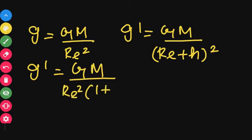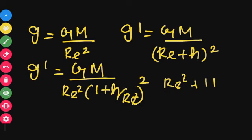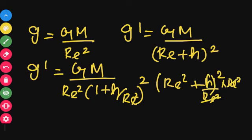So g' = GM / Re² × 1/(1 + H/Re)². We divide through by Re², so Re² cancels, and we get g' = GM / Re² × (1 + H/Re)⁻².